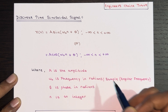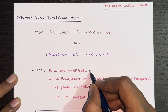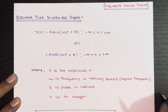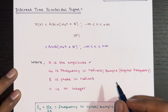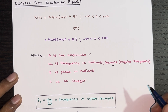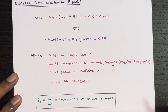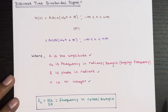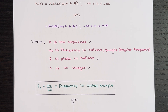Here, A represents the amplitude, ω₀ is the frequency in radians per sample, also known as angular frequency, θ is the phase in radians, and n is an integer.